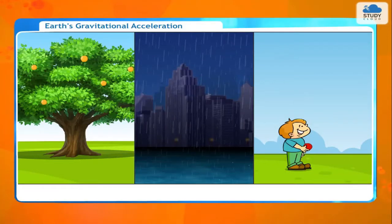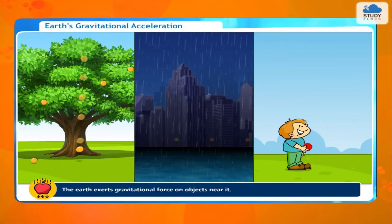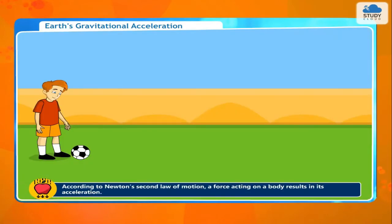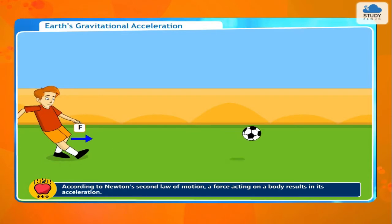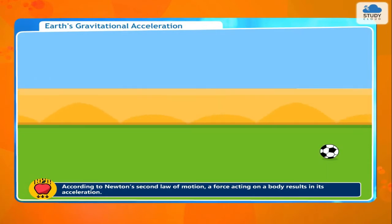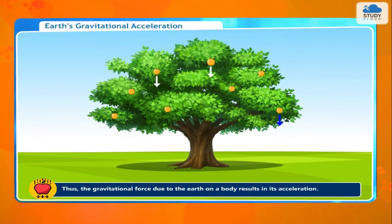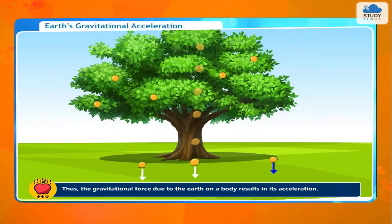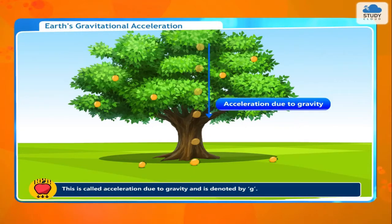Earth's Gravitational Acceleration. The Earth exerts gravitational force on objects near it. According to Newton's second law of motion, a force acting on a body results in its acceleration. Thus, the gravitational force due to the Earth on a body results in its acceleration. This is called acceleration due to gravity and is denoted by g.